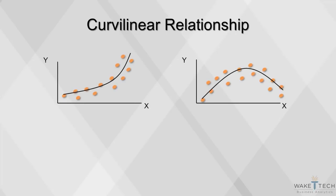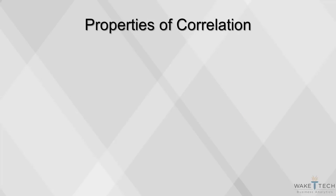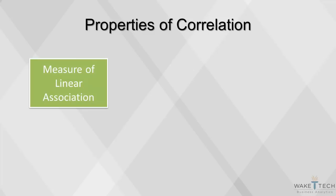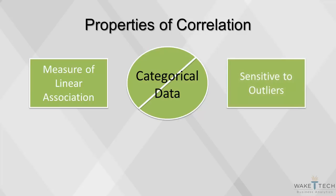If the relationship is curvilinear, using the correlation measure is not appropriate. If x changes and y stays the same, then the correlation is zero. Since the correlation measure is a measure of linear association, we cannot use correlations on categorical data. It's related to sample size, and it's also very sensitive to outliers.